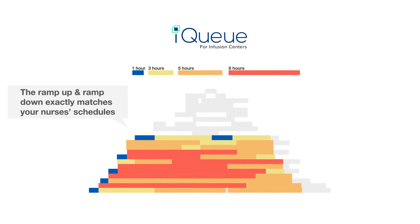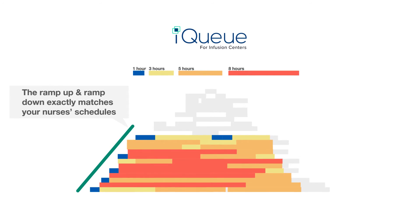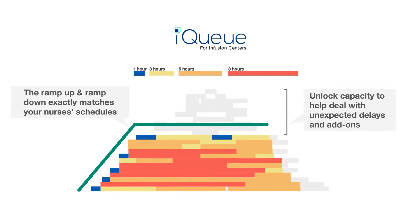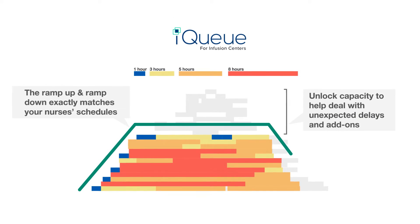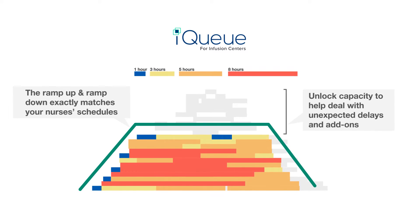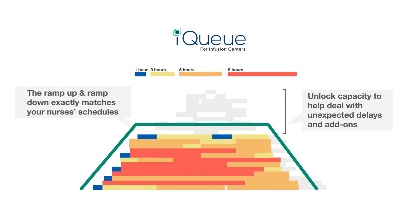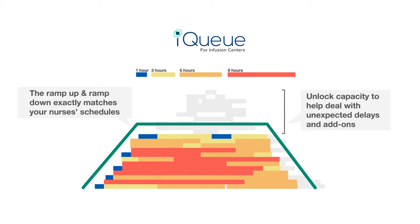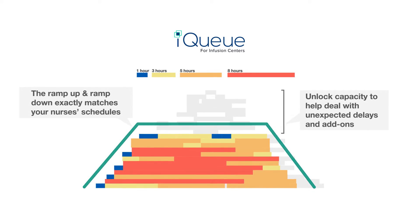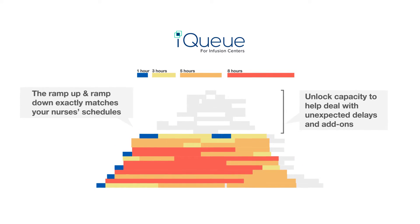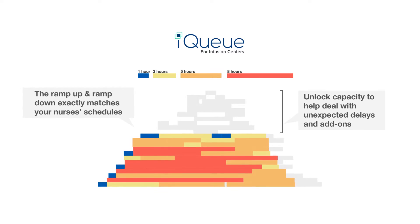The result? Utilization ramps up smoothly, stays flat for most of the day, and ramps down smoothly at the end of the day. It keeps the staff productively deployed while minimizing overtime or big swings in the workload from hour to hour. Finally, your nurses get a chance to take their lunch break.